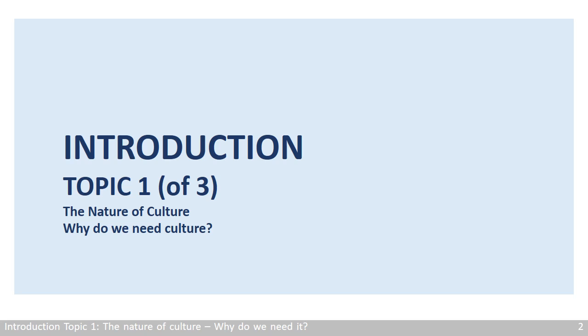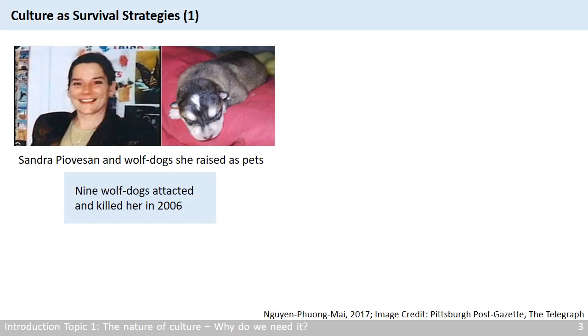So let's start with our first topic: what is culture, and from the biological and evolutionary point of view, why do we need it at all? In the textbook, you probably read about the tragic story of Sandra Pioveson. She was one of many pet owners who was killed by the animals that they once loved so dearly. In her case, the pets were not completely wild, but their nature still won over. We can clearly see that animals live with humans but act like animals and listen to their instinct, written in their genes.